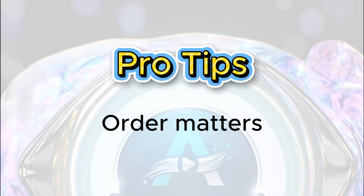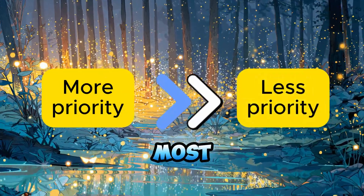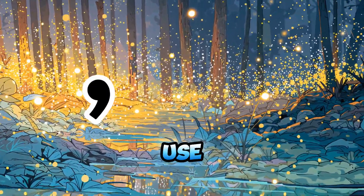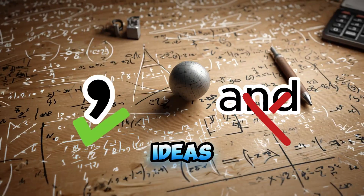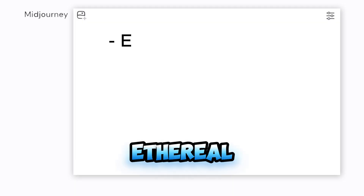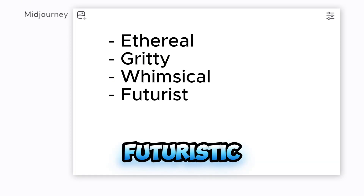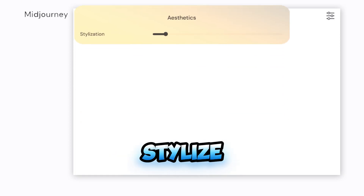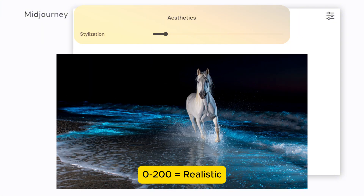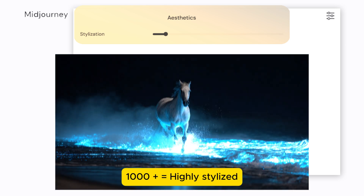Pro tips: Order matters — AI reads from left to right, so put the most important details first. Use commas instead of 'and' to keep ideas distinct. Use strong adjectives that match your vision — words like ethereal, gritty, whimsical, or futuristic. When you adjust the stylized setting: 0 to 200 gives realistic results, 400 to 800 creates a balanced or artistic look, and 1000 and above gives painterly, highly stylized images.